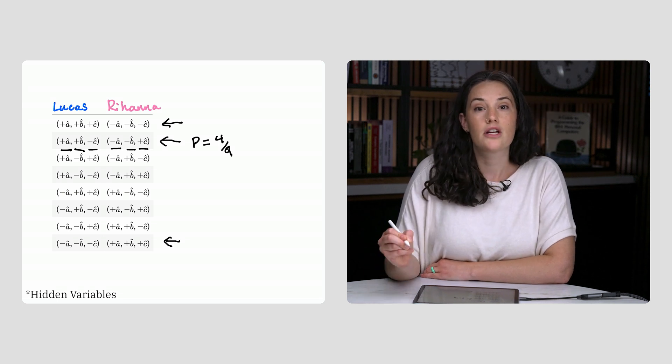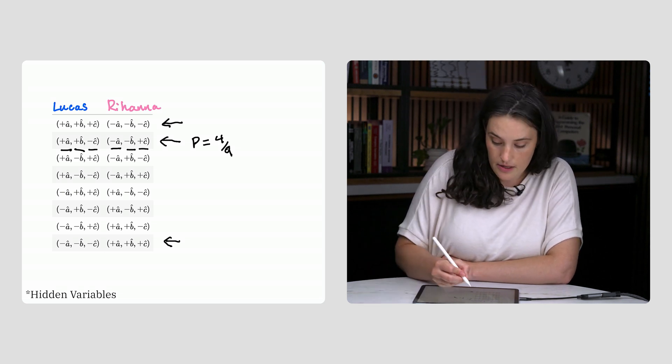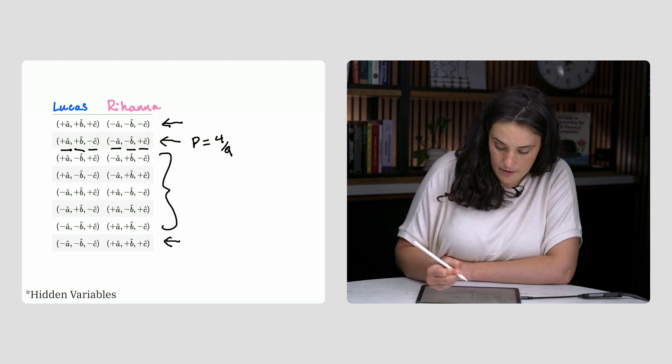If we do this for each set of the instructions, you'll see that rows 3 through 7 also give a probability of 4 ninths.